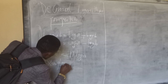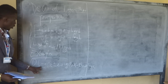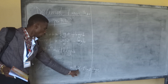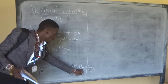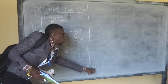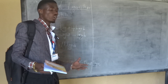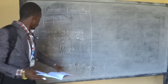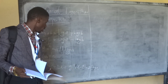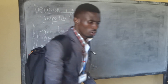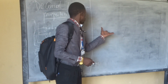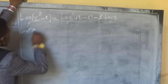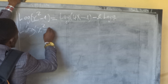Let's take an example. We have: logarithm of x squared minus logarithm of 4x minus 1, minus 2 times log 2. This is one example. Are you familiar with this, students? Let's try to solve this step by step. Logarithm of x squared minus 1.